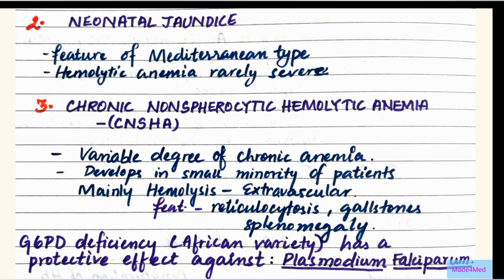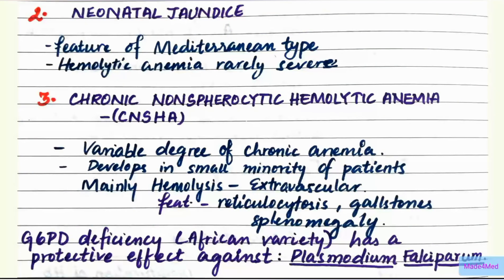Uncommonly, there are two other conditions in G6PD deficiency: neonatal jaundice and chronic non-spherocytic hemolytic anemia (CNSHA), which is a low-grade chronic anemia. Neonatal jaundice is a feature mostly of the Mediterranean type. CNSHA is a variable degree of chronic anemia developing in a small minority of patients. Hemolysis here is mainly extravascular, with features of reticulocytosis, gallstones, and splenomegaly.